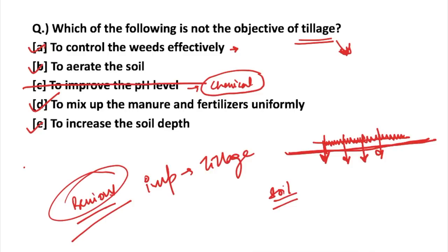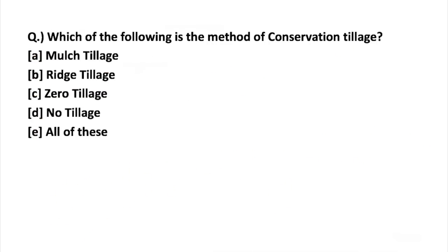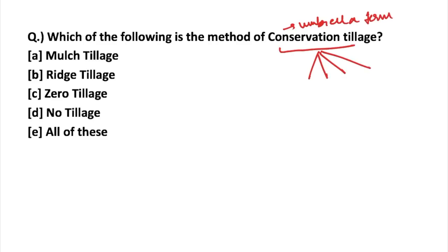Moving on to the next question: which of the following is a method of conservation tillage? Conservation tillage is basically an umbrella term — it covers four types of tillage. The first is mulching or mulch tillage, the next is ridge tillage, then zero tillage, and the last is no tillage.